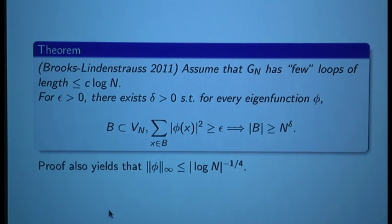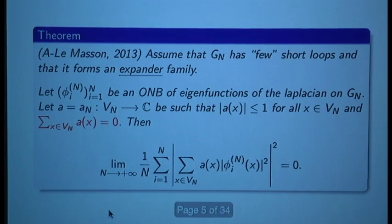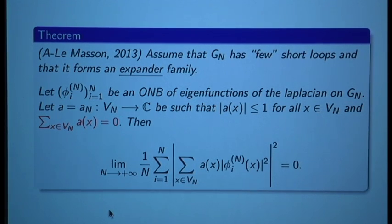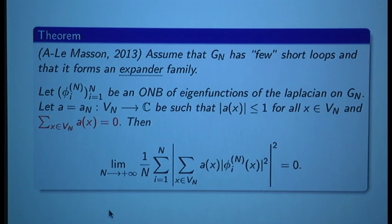We are also interested in this probability measure associated to each eigenfunction. For each eigenfunction, we want to associate a probability measure on the set of vertices, and compare it to the uniform measure. This is the main result of the talk, and we call it quantum ergodicity on graphs, to recall a result called quantum ergodicity on manifolds — not to be confused with quantum unique ergodicity.